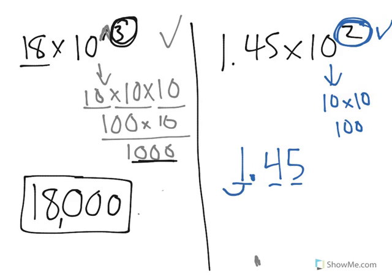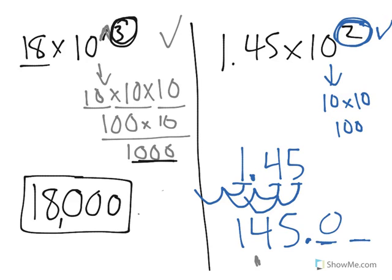So, the 1 moves over 1, 2, the 4 moves over 1, 2, and the 5 moves over right before the decimal point. And you have 145, and then the decimal point. Now you can see there's nothing after the decimal point, which means that these are all just zeros.